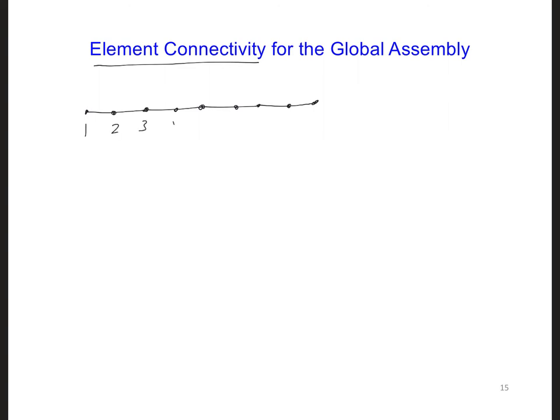I'm going to number them just straight across from left to right. And these are the global node numbers. We need to identify a pattern that will help us to define the global node numbers that correspond to each element of the grid.